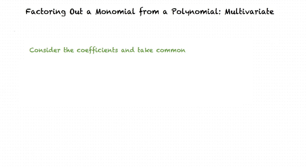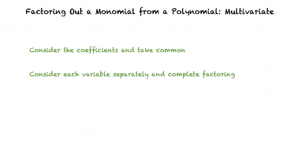I think I understand the concept. In order to factor a monomial from a multivariate polynomial, we first consider the coefficients of the variables in each term and take out the common constant. Next, we consider each variable in the polynomial separately and take the variable raised to the appropriate power as common from each term, and finally complete factoring the monomial from the polynomial.